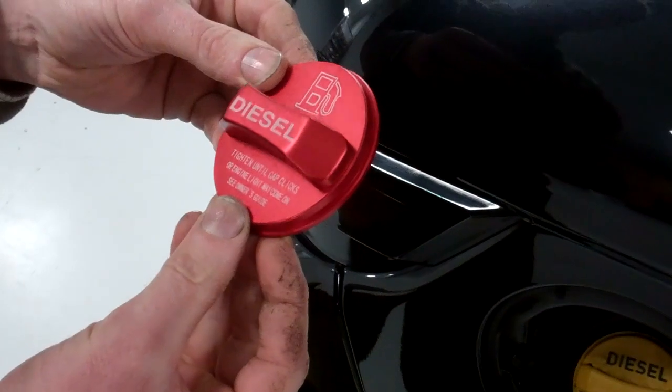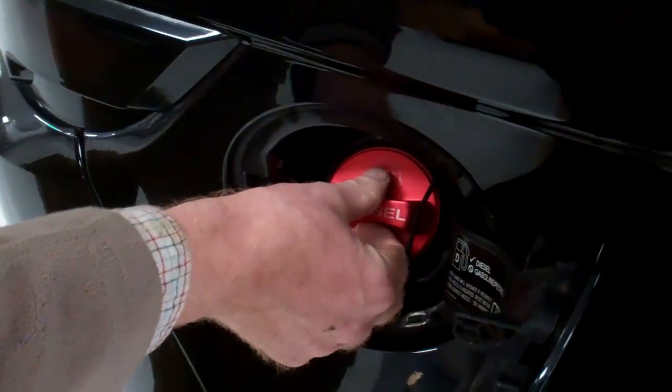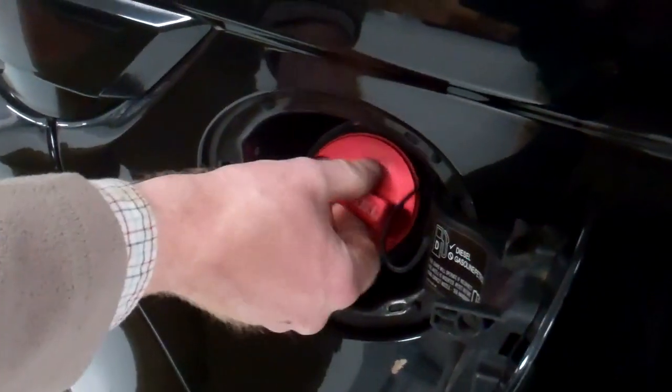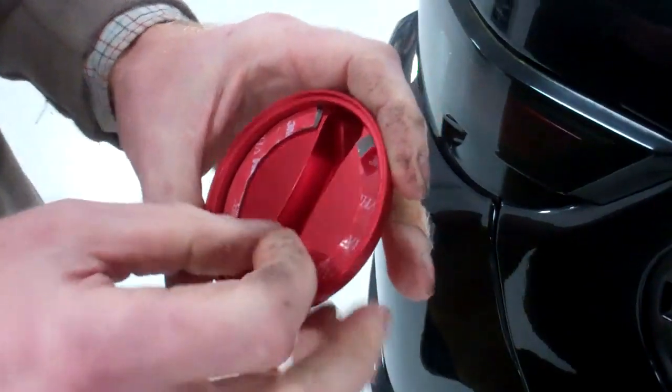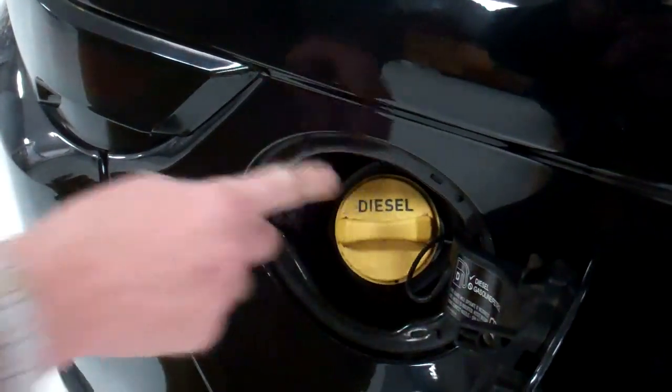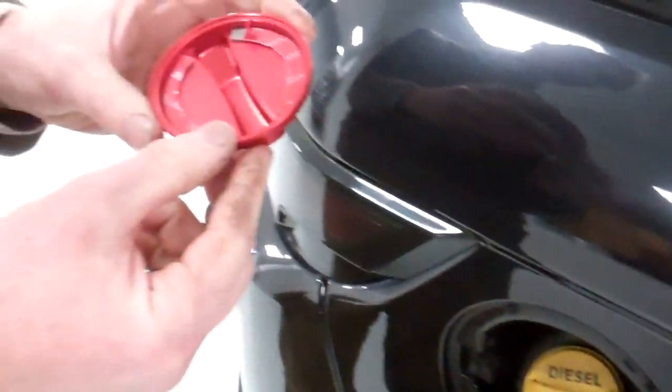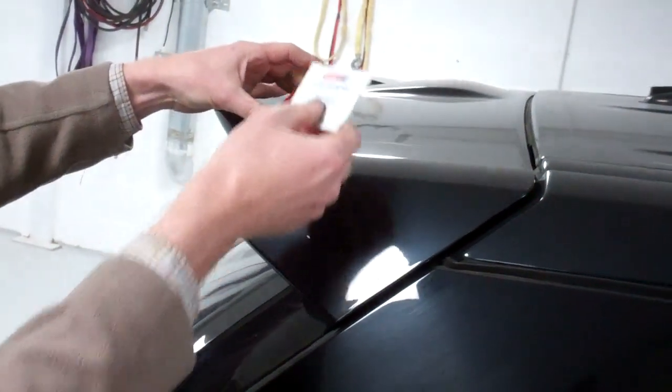So that fits on there. Now it's held on with some double-sided tape, but just because this could get oily, we're going to add a bit of silicon. So we're going to put it with the kit with some silicon.